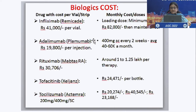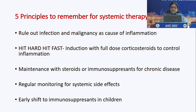Five principles to remember for systemic therapy in uveitis: rule out infection and malignancy before starting steroids or immunosuppressants; hit hard and fast in the induction phase with full dose corticosteroids; maintenance with steroids or immunosuppressants is required for chronic inflammatory diseases; regular monitoring is required for systemic side effects; and shift children early to immunosuppressants since long-term corticosteroids can hamper growth.